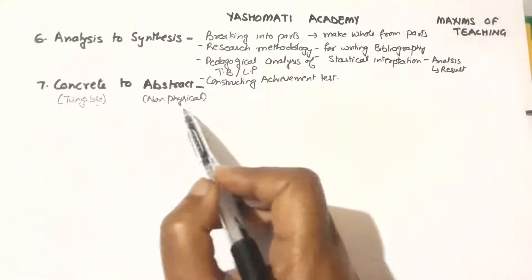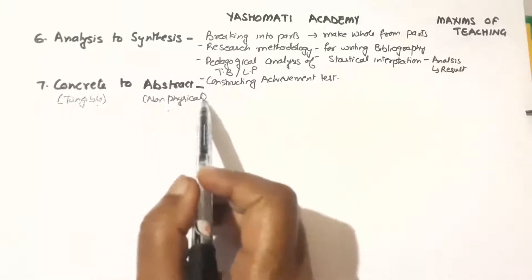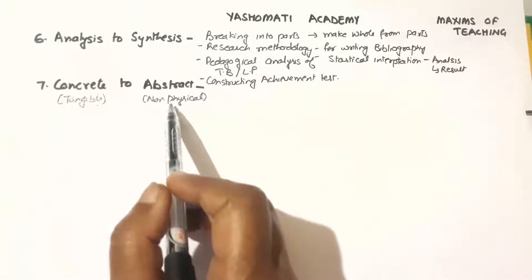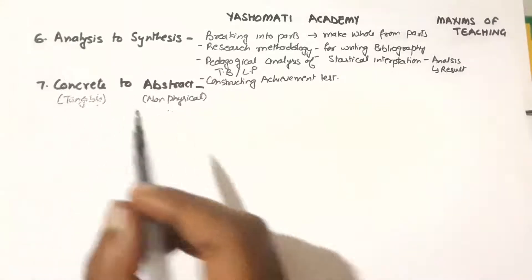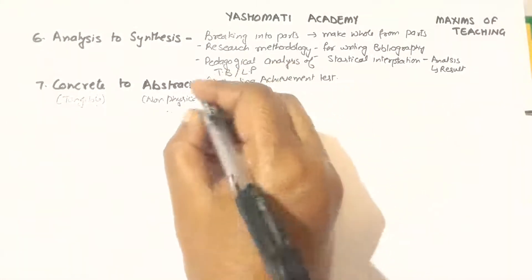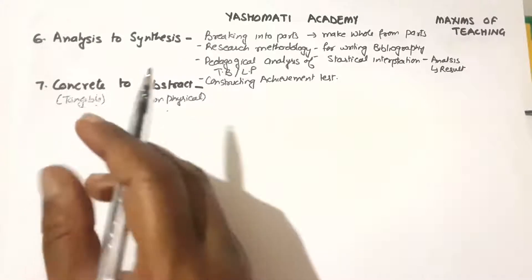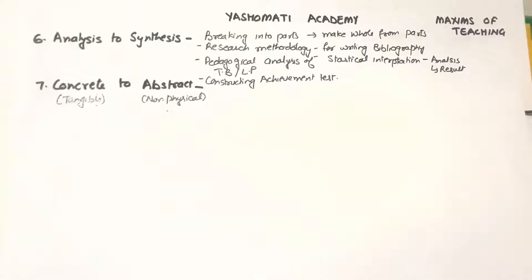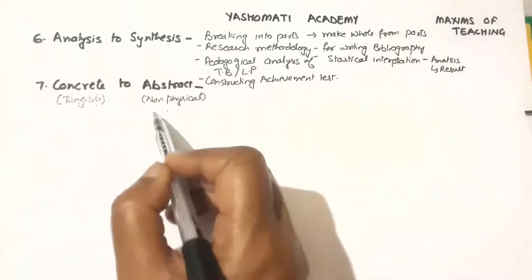But being a teacher we have to measure both. So when we have to measure the abstract aspect of the learner, we use tools which are based on concrete measurements. For example, the ink blot test or projection method is used to understand personality. Personality is abstract, but the ink blot test uses certain tools with which we can actually observe what we want to see in the personality of the learner. In other words, to observe abstract, we use concrete tools.